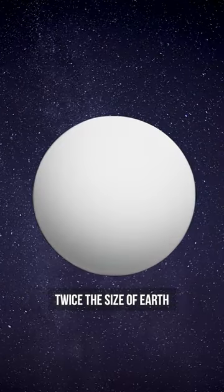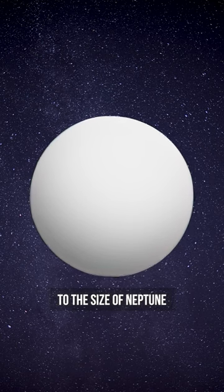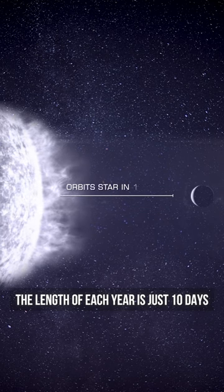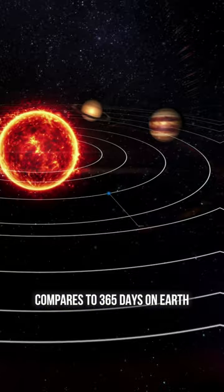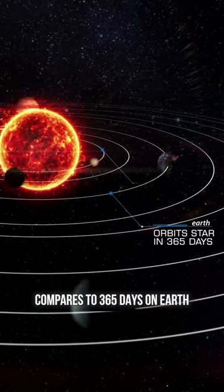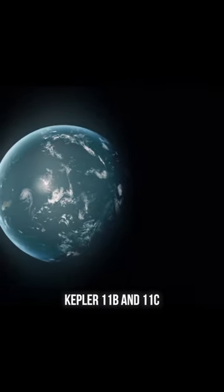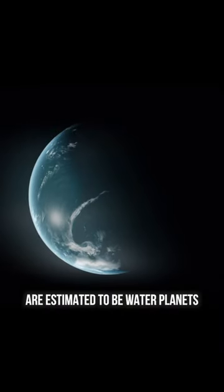Some of these planets are about twice the size of Earth, while some are closer to the size of Neptune. The length of each year is just 10 days on the innermost planets, compared to 365 days on Earth and 81 days on Mercury. The two closest planets, Kepler 11b and 11c, are estimated to be water planets.